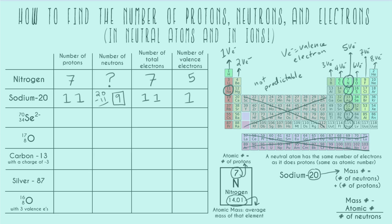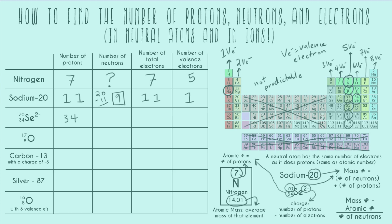Now going to our next example, written a little bit differently: the number to the top left is the mass number, and the number on the bottom left is the atomic number. We can double-check by looking up selenium on the periodic table — it's number 34. Then we have the atomic symbol Se, and the number to the top right is our charge. Charge is the number of protons minus the number of electrons. So, number of protons is just that atomic number 34. For number of neutrons, we subtract from the mass number: 70 minus 34 gives us 36 neutrons.